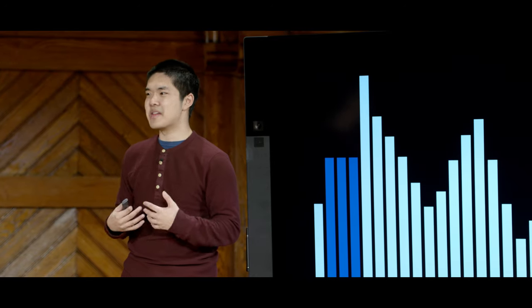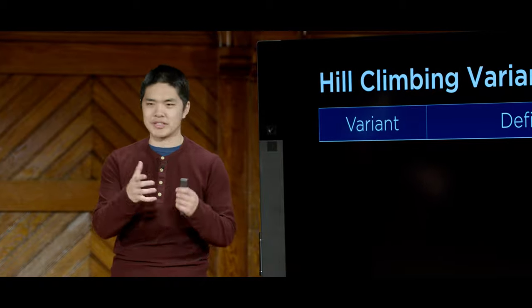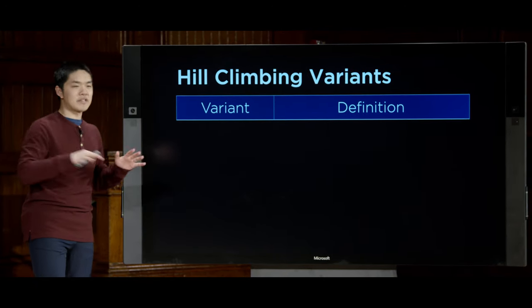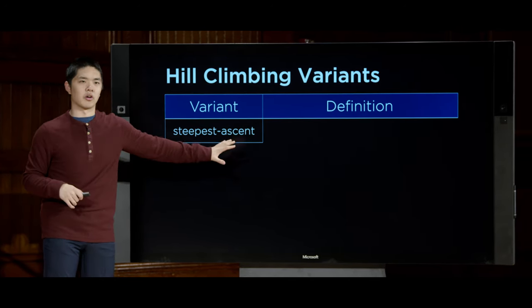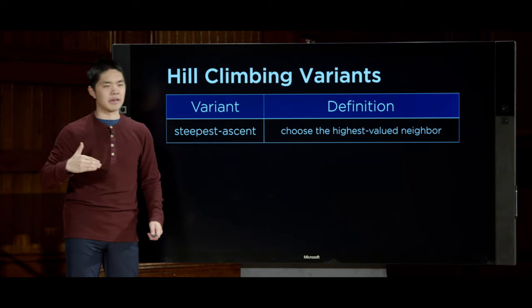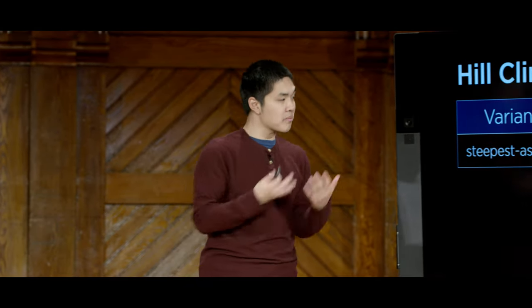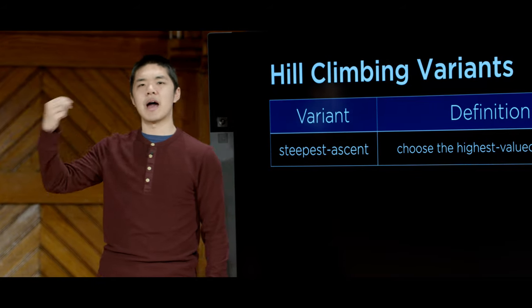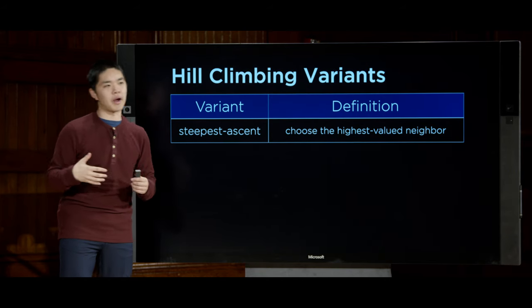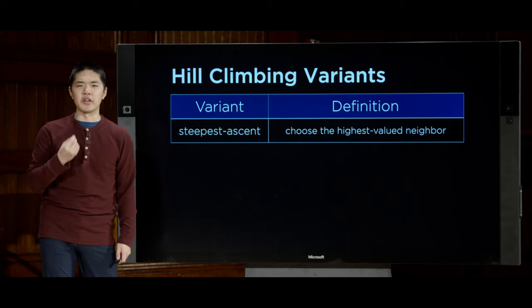Because hill climbing might not always find the optimal result, there are several variants. What we've looked at is steepest ascent hill climbing, which always chooses the highest-valued neighbor when maximizing, or lowest when minimizing — a greedy approach. But there might be cases where choosing an option that is slightly better but not the absolute best could lead to a better outcome ultimately.